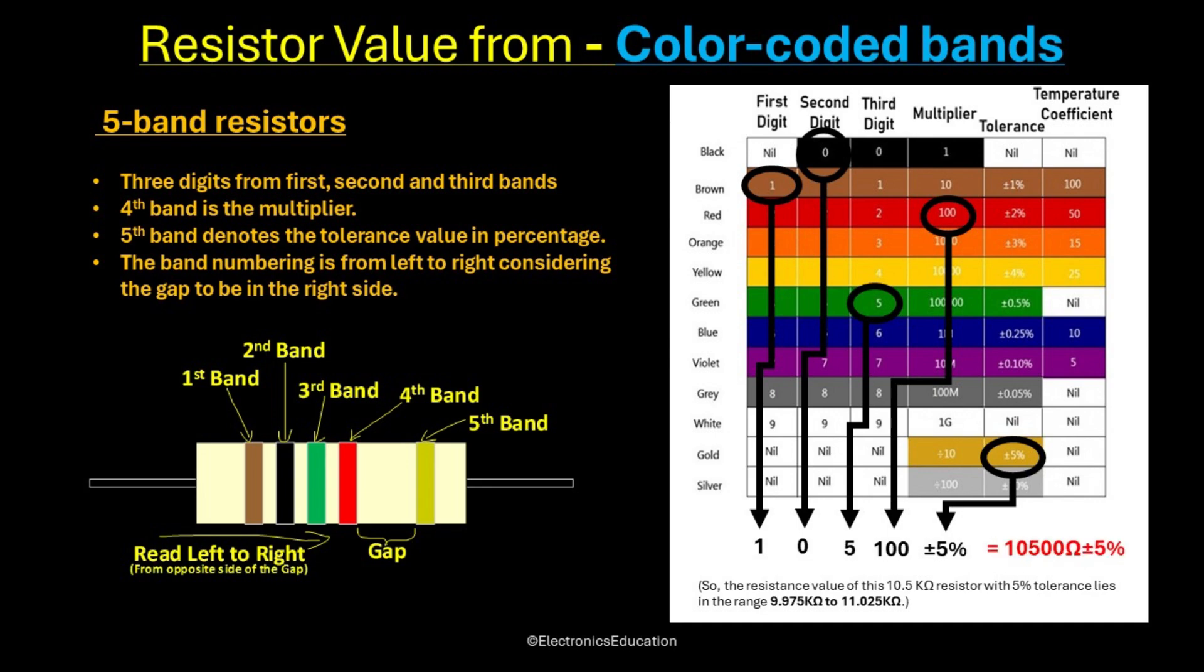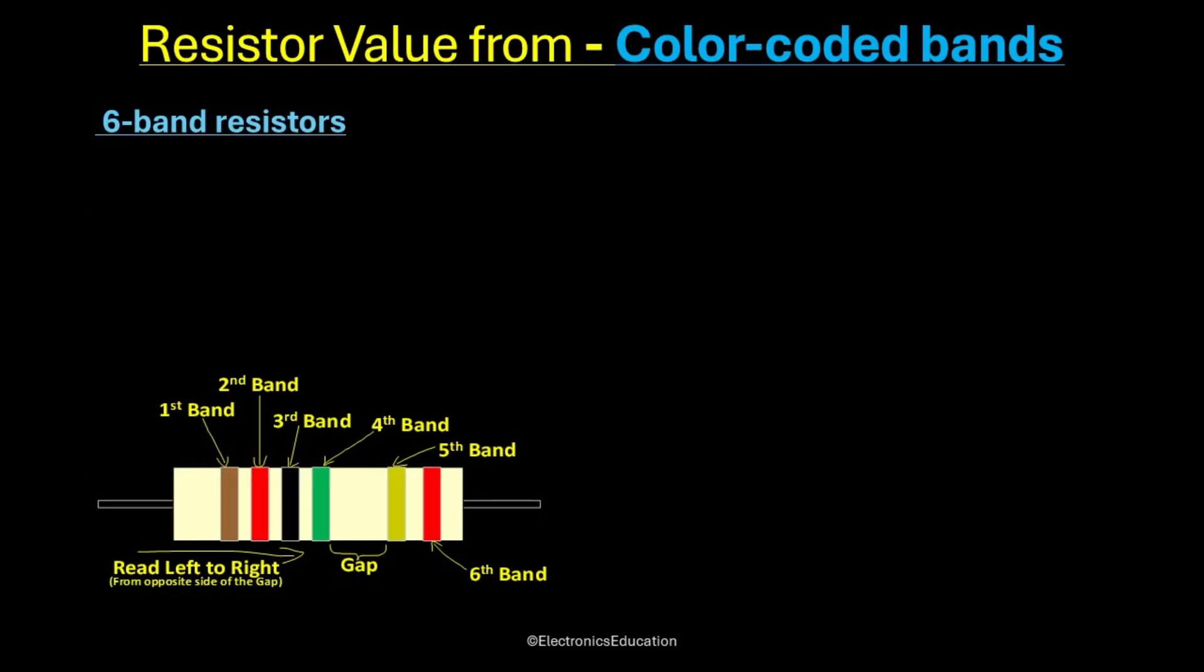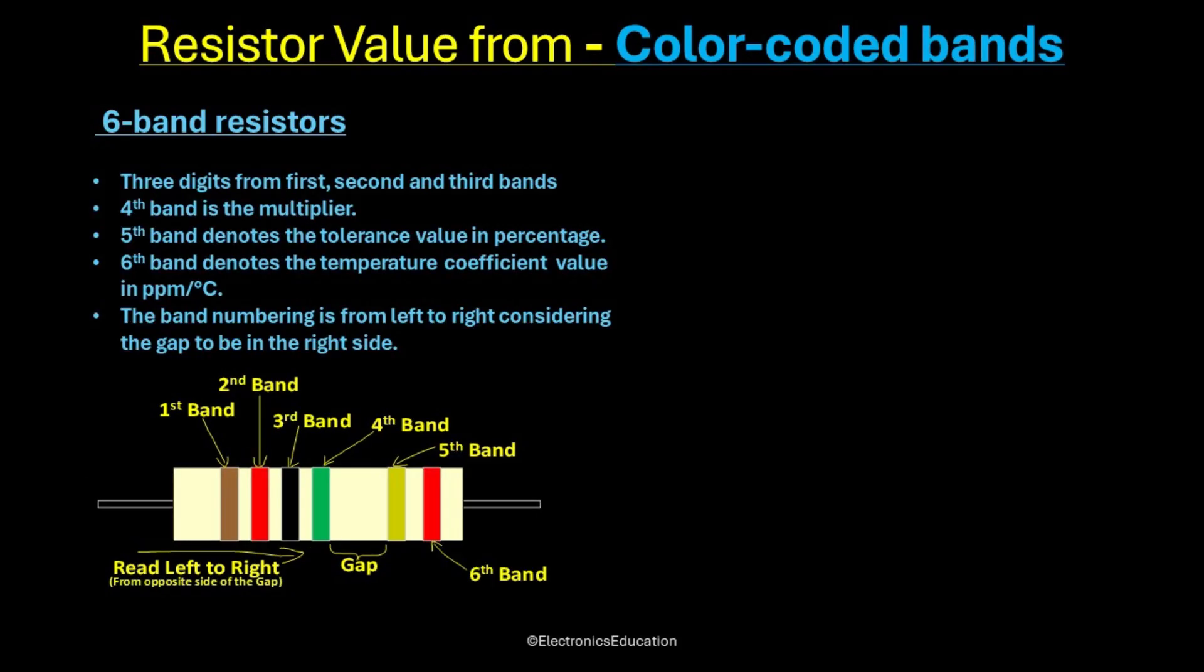This means the resistance value can be anything between 9.975 kiloohms to 11.025 kiloohms. The sixth band color code is used for precision resistors, where not only high accuracy is needed, but also information about how the resistance changes with temperature is also essential.